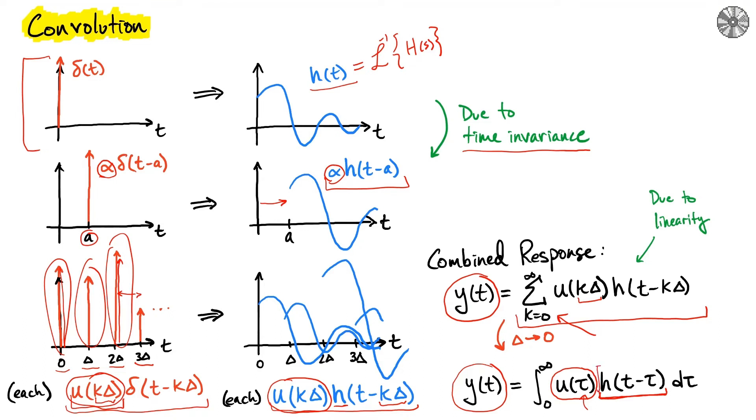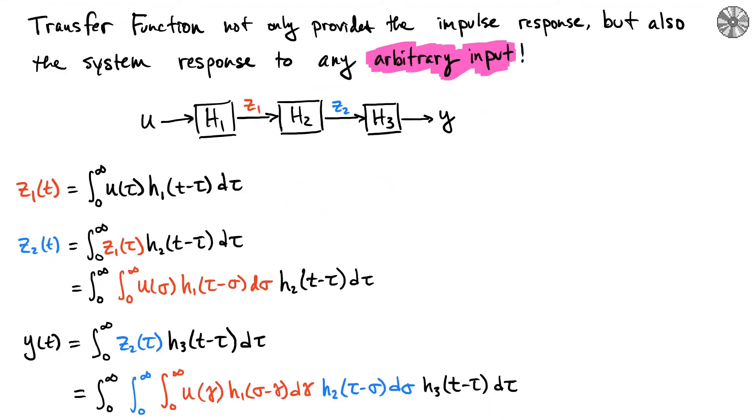Reiterating what I just said: the transfer function or impulse response doesn't only provide us the response due to an impulse but also to any arbitrary input. This particular formula is called the convolution solution and has this special structure where you have one function evaluated in tau and one function shifted in tau, and t is the variable we end up with once we integrate over tau.